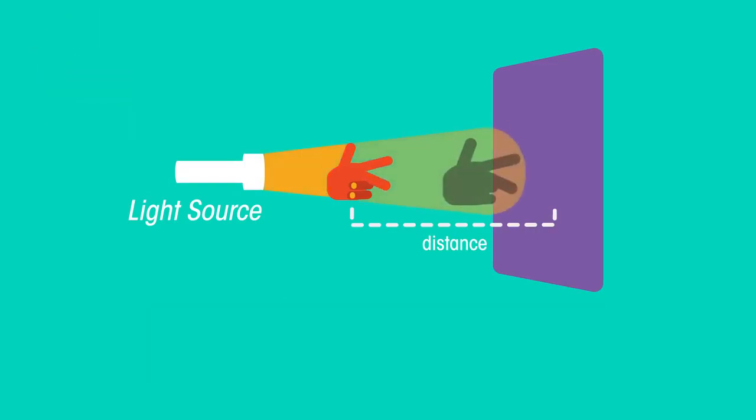The size of the shadow—both the umbra and penumbra—increases.